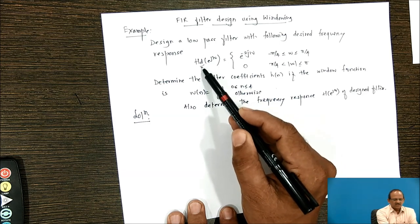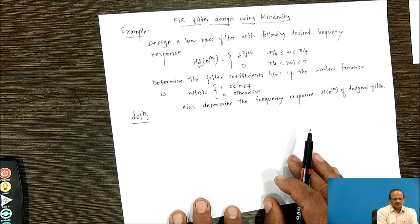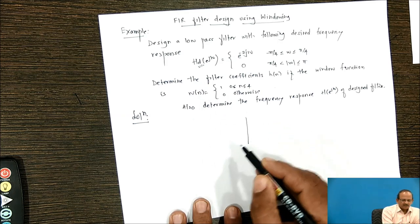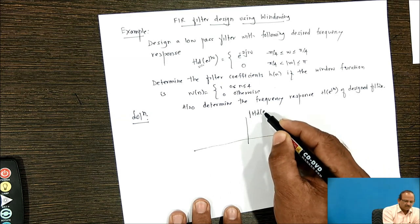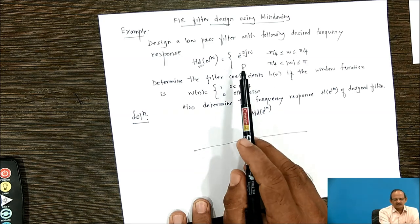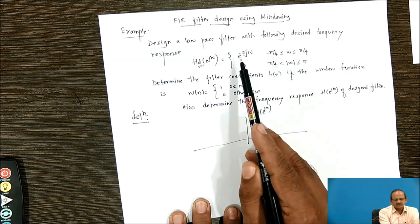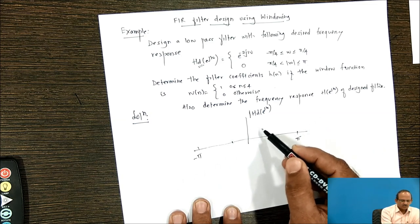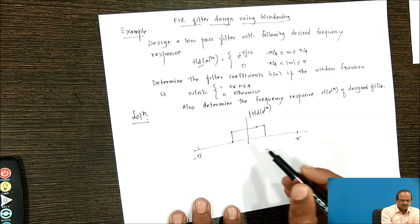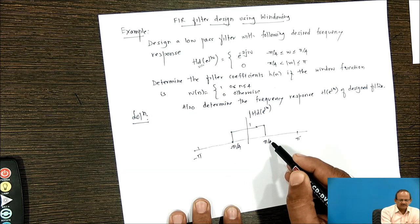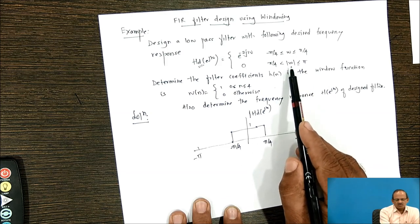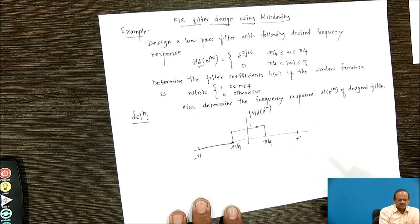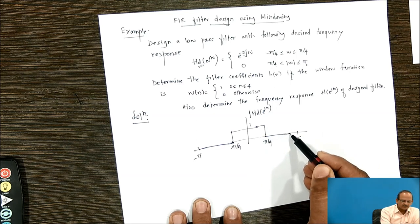Here Hd stands for desired frequency response. Let us plot the magnitude of this frequency response, |Hd(e^jω)|. The magnitude between -π/4 to +π/4 is 1. The response is 0 from -π to -π/4 and also 0 from +π/4 to π.